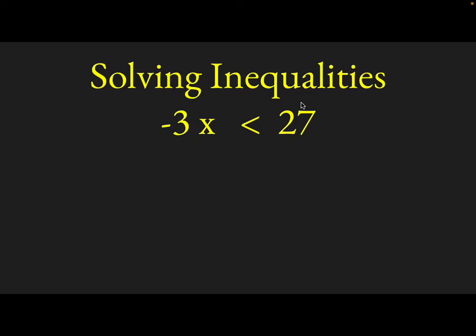So we have an inequality here, negative 3x is less than 27, and what we're going to do is look at a wrong way to approach this first.